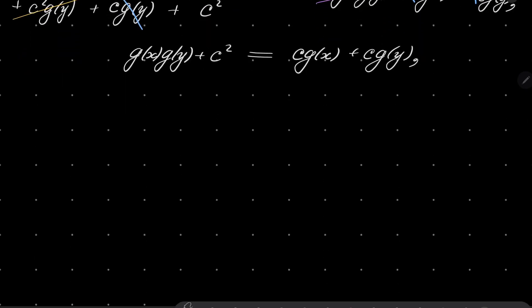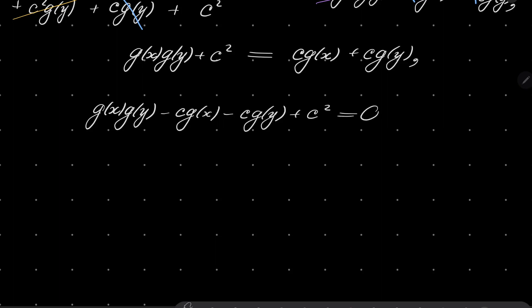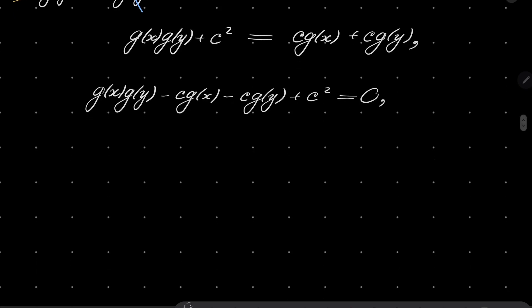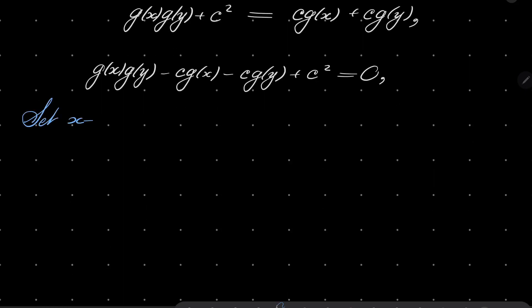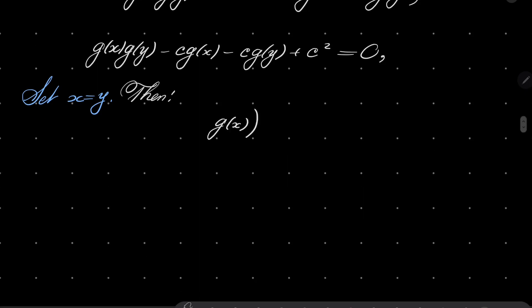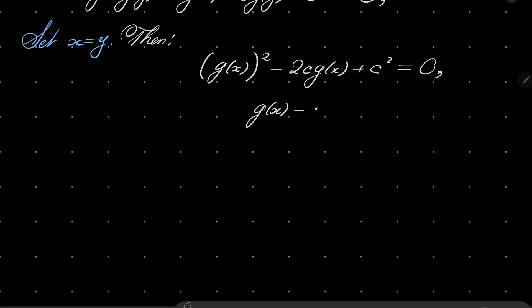Putting this on the left hand side: g(x)·g(y) − c·g(x) − c·g(y) + c² = 0. A nice thing happens when we set x equal to y: g(x)² − 2c·g(x) + c² = 0, which is [g(x) − c]² = 0. This means that for every real number x, g(x) must equal c. Our function g is constant.